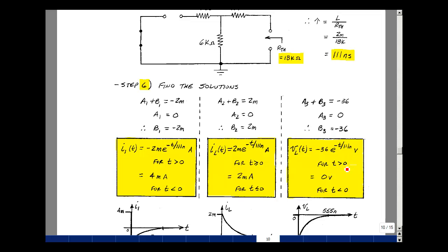But for T less than 0, we found that the voltage was 0. It was a short circuit in steady state. So we have a discontinuity here. We're going to jump from 0 to minus 36.